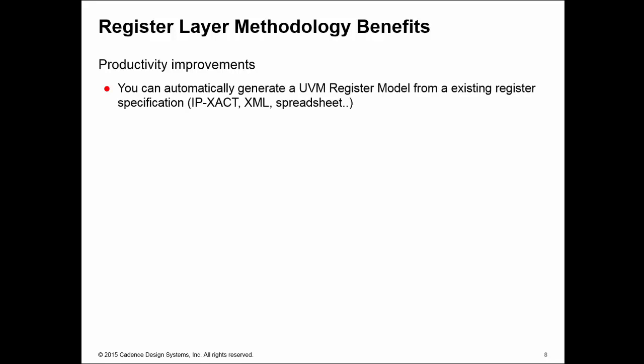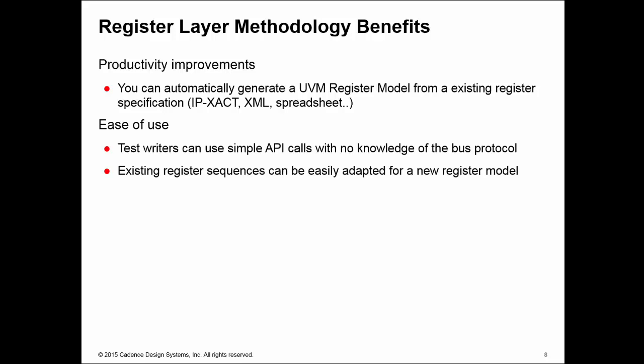These are some of the acknowledged benefits of using UVM register modeling. First, productivity improvements - you very rarely write the register model yourself; instead, we normally generate the register model from a specification such as the IEEE standard IP-XACT, or from XML or spreadsheet content. This makes it easy to keep the model up to date - if something changes, update the specification and regenerate. You also have ease of use because test writers can use the simple built-in register API methods to do read and write operations with no knowledge of the protocol actually being used by the DUT.